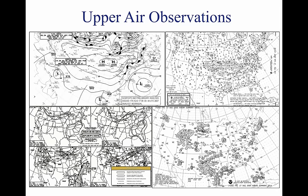Together, PIREPs and radiosonde observations provide information on upper air conditions important for flight planning. Many domestic and international airlines have equipped their aircraft with instrumentation that automatically transmits in-flight weather observations through the data link system to the airline dispatcher, who disseminates the data to appropriate weather forecasting authorities.